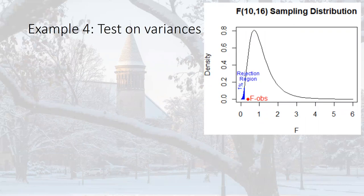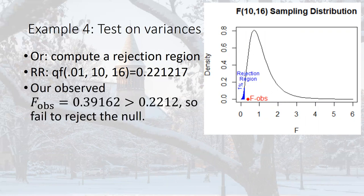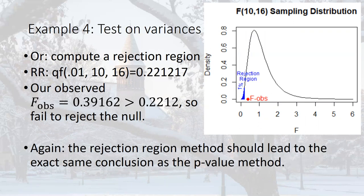With alpha equals 0.01, the p-value of 0.068 is greater than 0.01, so we fail to reject the null. For review, the rejection region using qf at the 1st percentile of F(10,16) begins at 0.22. Our observed F of 0.3916 does not fall in that blue region, so we fail to reject — the same conclusion as the p-value method. These are p-values computed three different ways. Watch this lecture a couple of times because this is one of the most important concepts in STAT 3202.